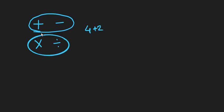For example, if I write 4 plus 2 minus 2, the result remains 4. By adding 2 and then subtracting 2, it actually undoes the operation and we get the same result. The same goes for multiplication and division.